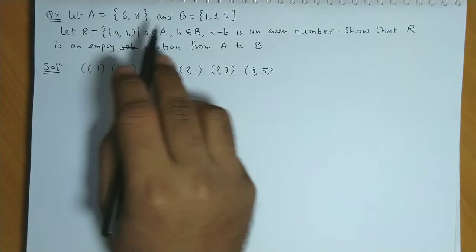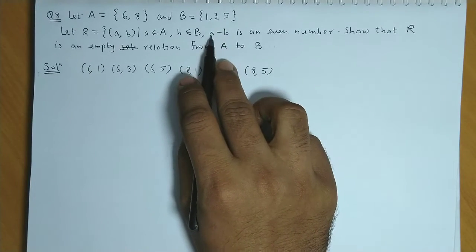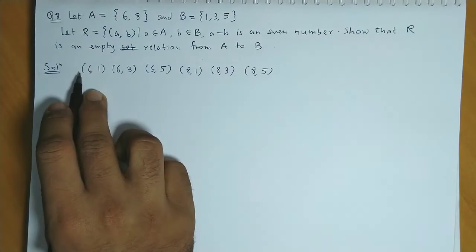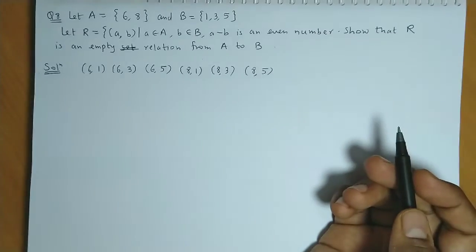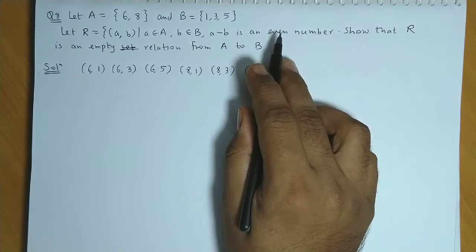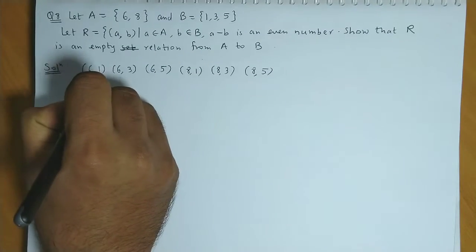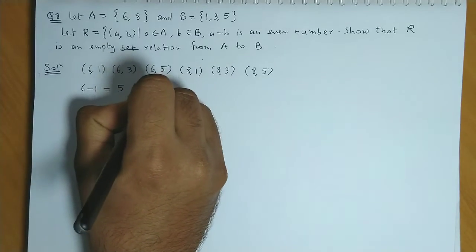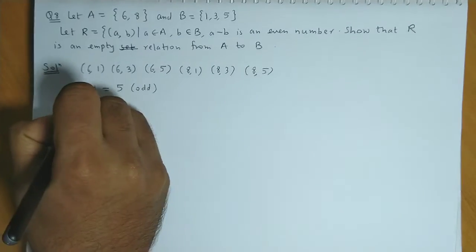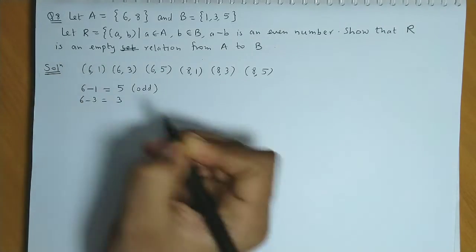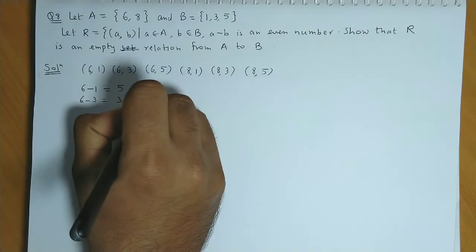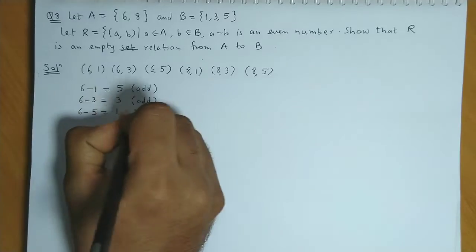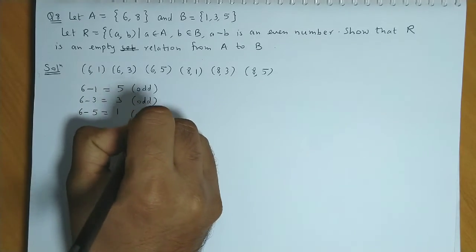Now the condition given is a minus b is an even number. So we check the a minus b values. 6 minus 1 is 5, which is odd. Then 6 minus 3 is 3, which is again an odd value. 6 minus 5 is 1, which is also odd.